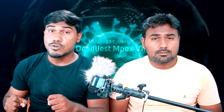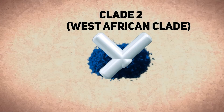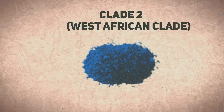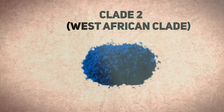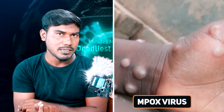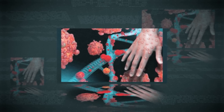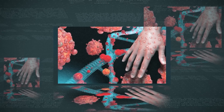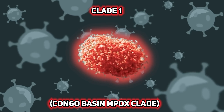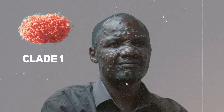What does this Clade 2 variant mean? It is not a very strong virus, nor is it a weak virus. That is why this outbreak has been controlled. The Clade 1 variant is more severe than the West African Clade 2 variant.